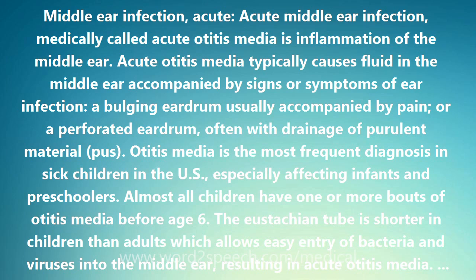The eustachian tube is shorter in children than adults, which allows easy entry of bacteria and viruses into the middle ear, resulting in acute otitis media. Bacteria such as Streptococcus pneumoniae (strep) and Haemophilus influenzae (H. flu) account for about 85%